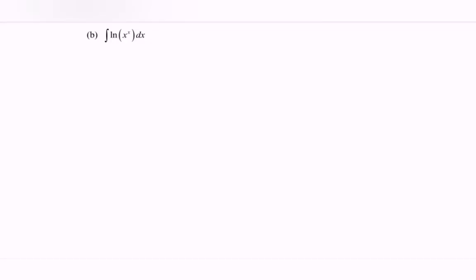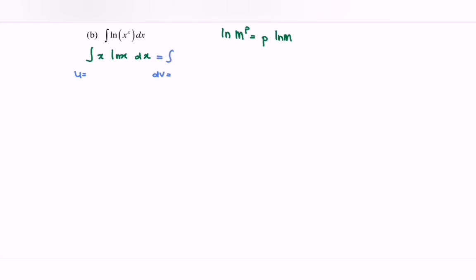Next we have (b). So we have to integrate the situation. Before we begin, let's focus on the law of logarithms. So here we have ln m to the power of p. We can make use of the law of log: that equals p multiplied by ln m. So same for this case, we have integrate x ln x with respect to x. Making use of the integration by parts method, so we have u and dv. Compare this to the formula integrate u dv. So we have: ln, polynomial, exponent, and trig.